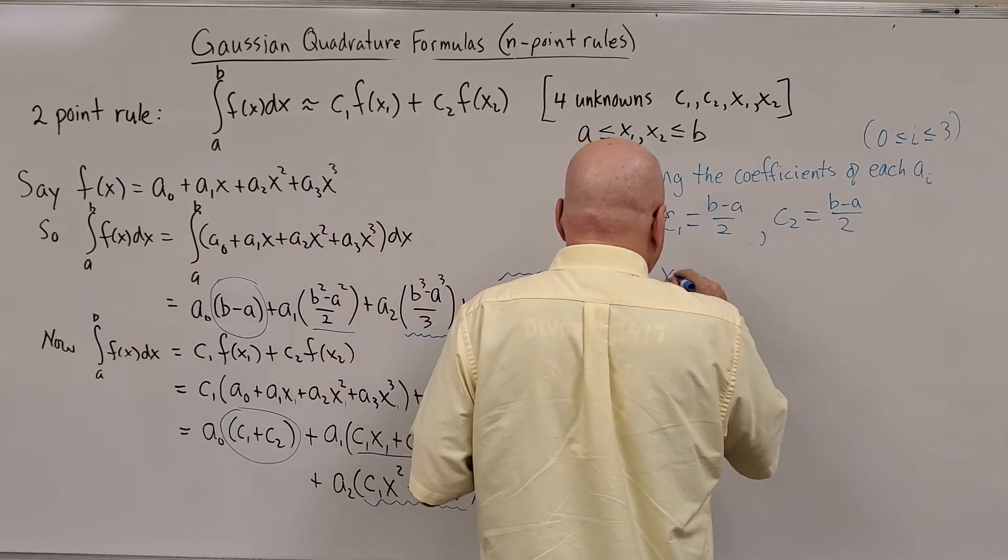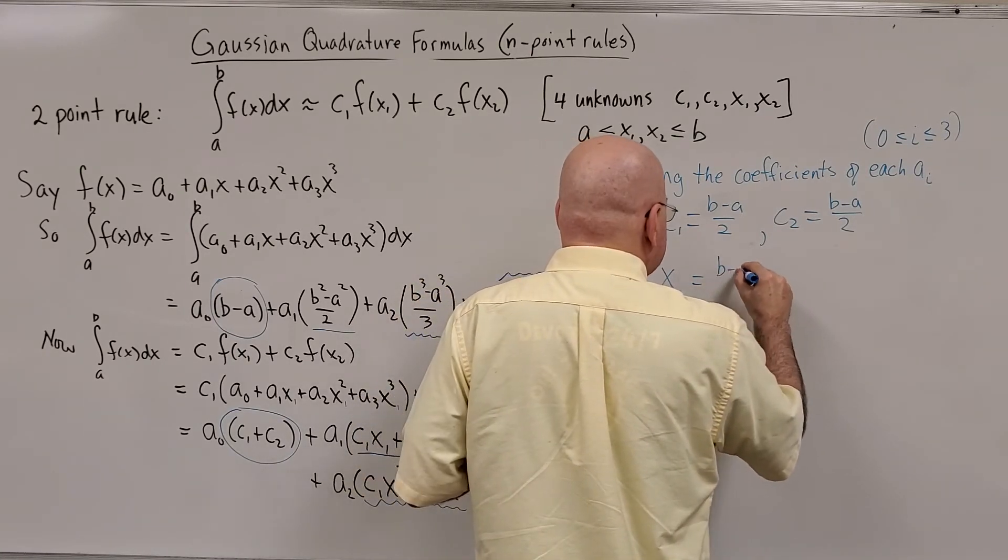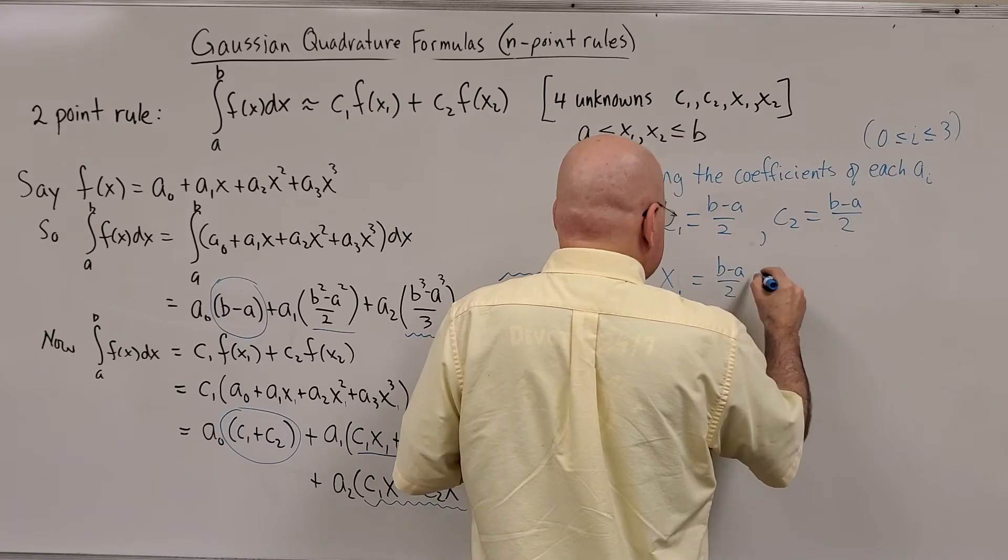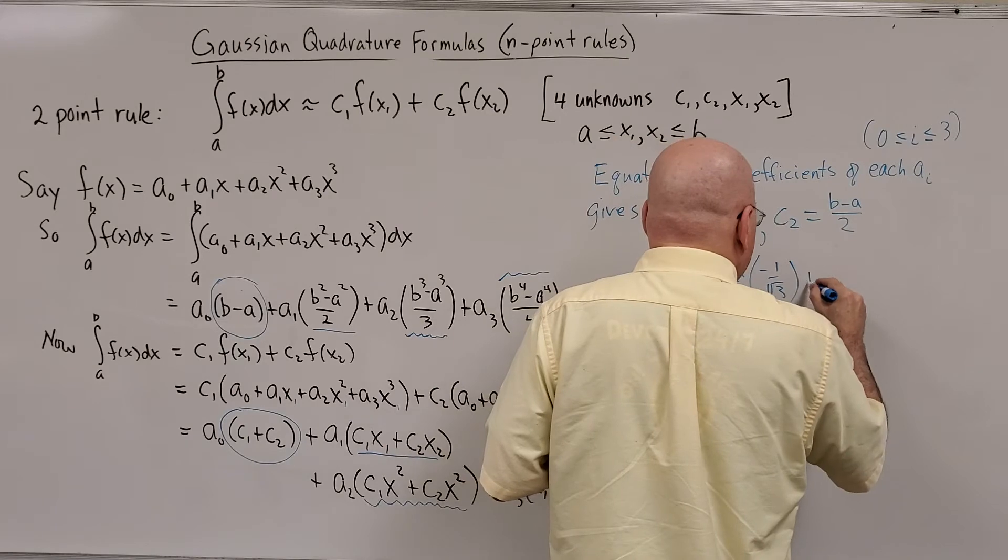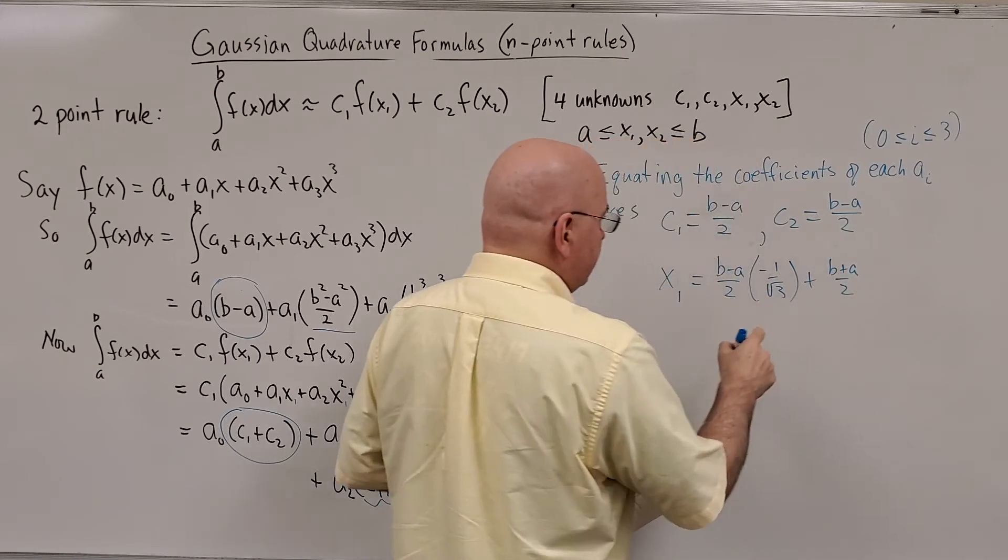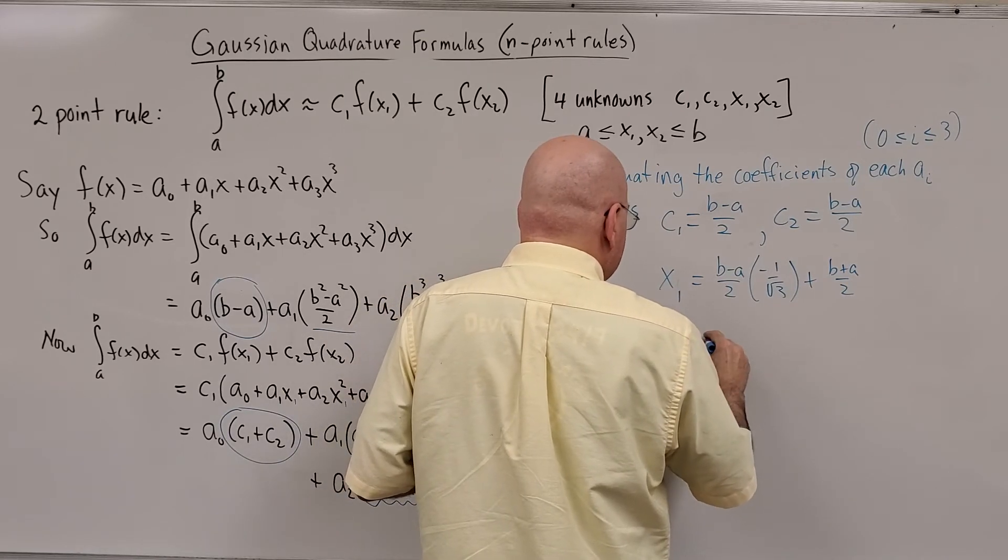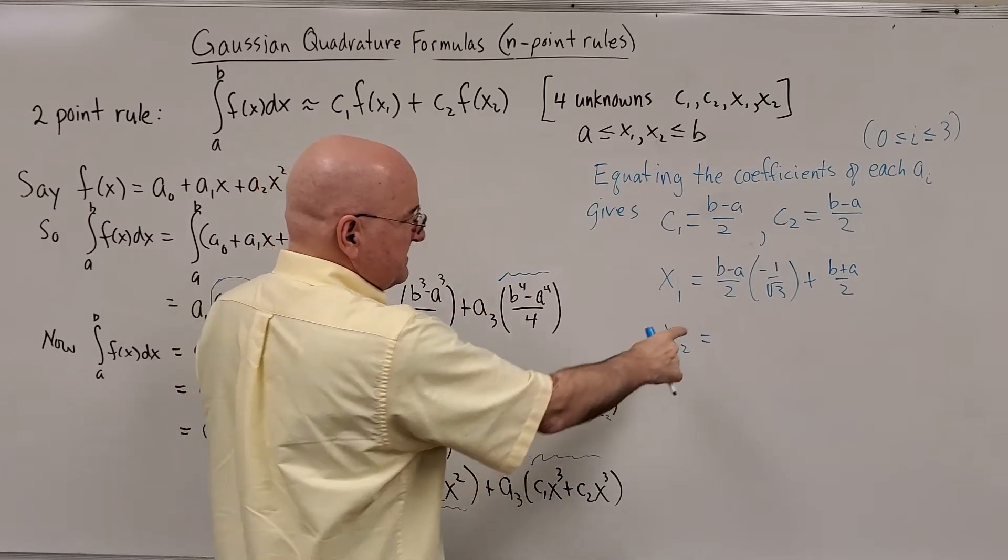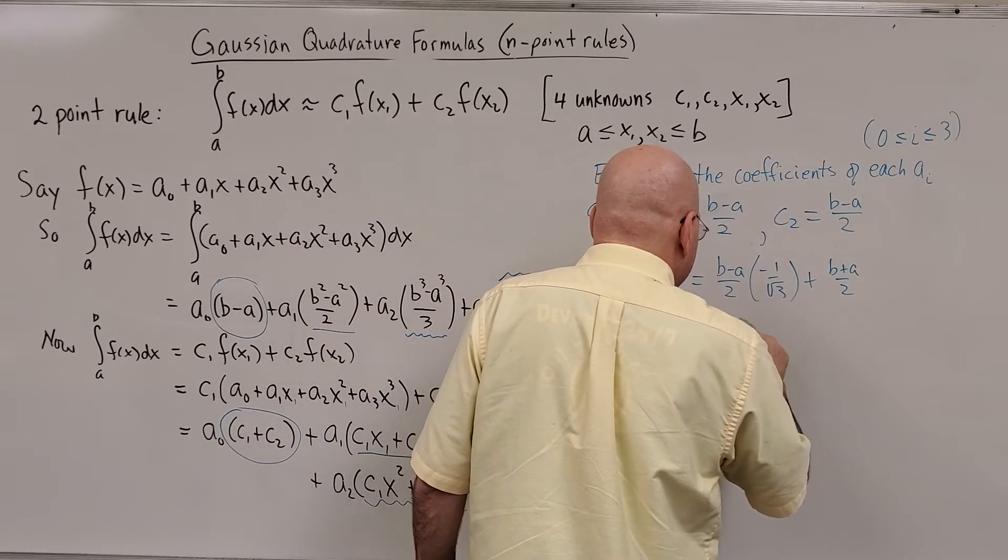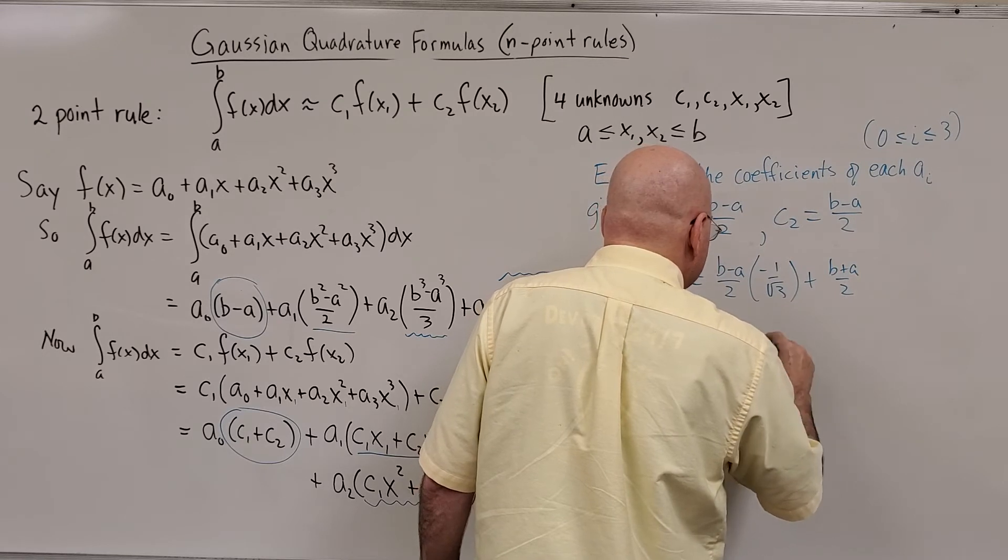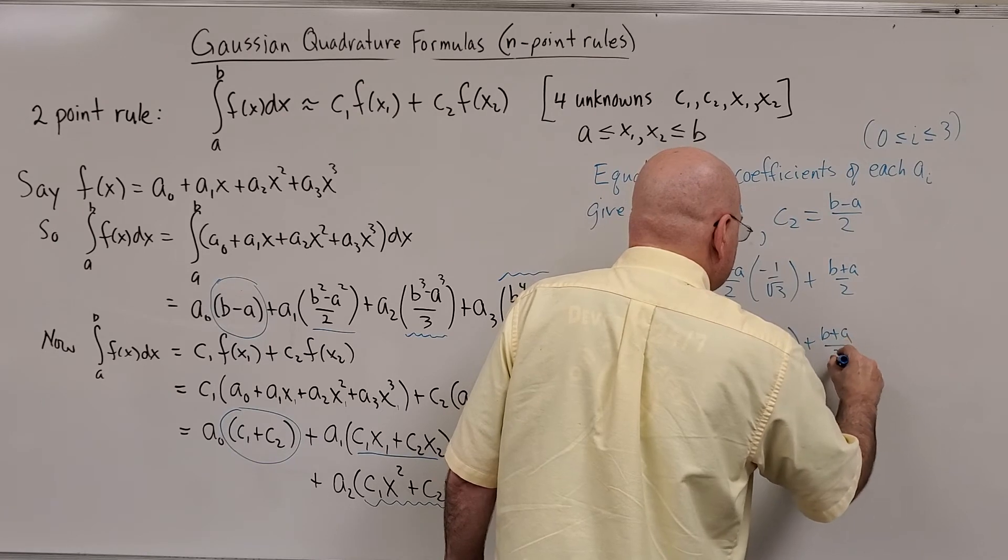Now X1 and X2, a little more complicated. X1 turns out to be B minus A over two times negative one over radical three plus B plus A over two. That's the midpoint. This is here. And X2 is going to be almost identical. It's just this is going to be a positive number. So B minus A over two times one over root three plus B plus A over two.